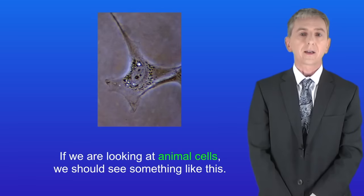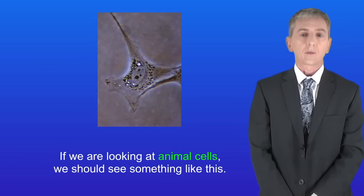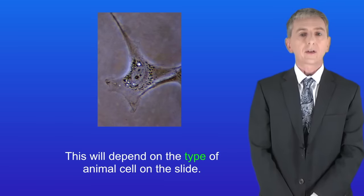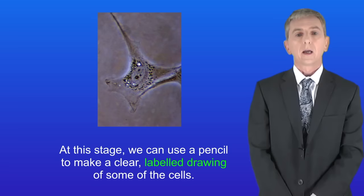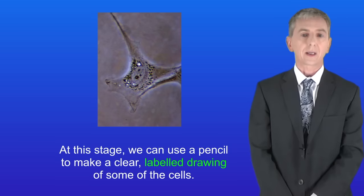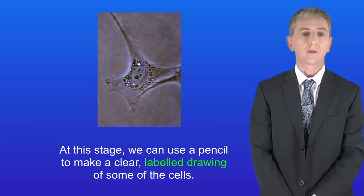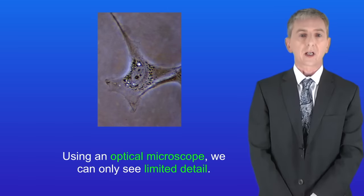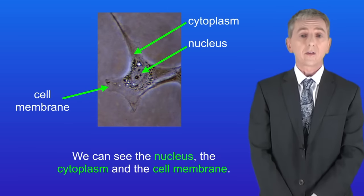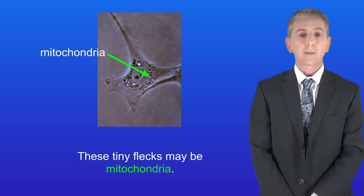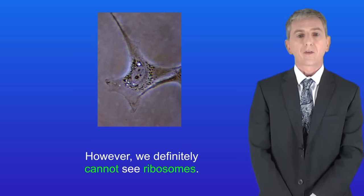If we're looking at animal cells we should see something like this. I should point out that this will depend on the type of animal cell on the slide. At this stage we can use a pencil to make a clear label drawing of some of the cells. Now using an optical microscope we can only see limited detail. We can see the nucleus, the cytoplasm and the cell membrane, and these tiny flecks may be mitochondria. However we definitely cannot see ribosomes.